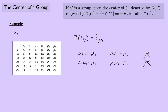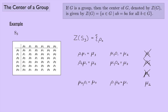We didn't have any luck with the rho's. How about the mu's? We just saw that mu one and rho one didn't commute, so mu one can't be in the center — mu one is no good. How about mu two? Let's try mu two together with rho one. Mu two times rho one gives mu three, and rho one times mu two gives mu one. So mu two is no good. And you can check for yourself that mu three is also no good.